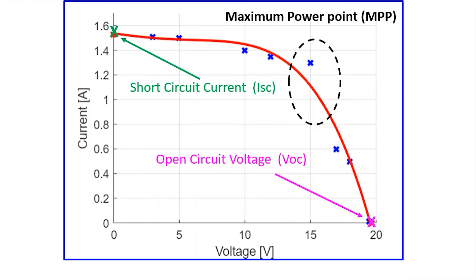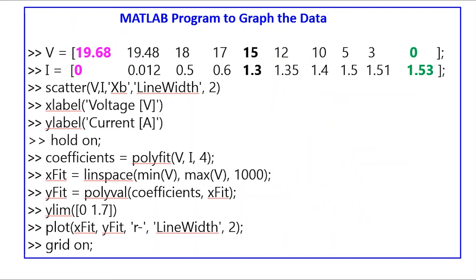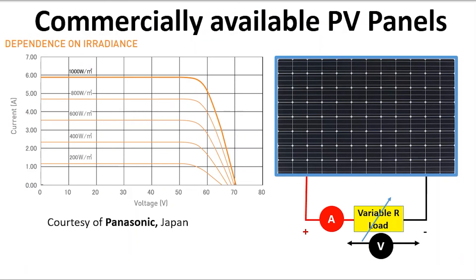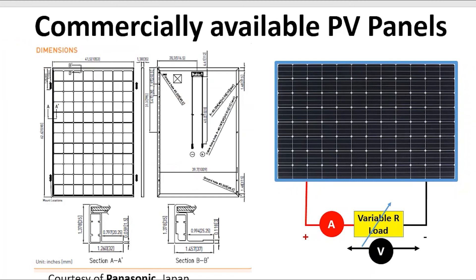I have put the short circuit current and open circuit voltage on the same graph. If anybody wants the MATLAB code I used, you can have it here. If you want to go to the market and buy these panels, they will provide these graphs for different irradiance conditions — you can see the top curve is at 1000 watts per meter squared, and as irradiance goes down the curve comes down. The datasheets also give dimensions in both millimeters and inches, for rooftop or large-scale power project design.